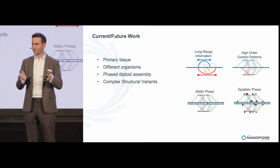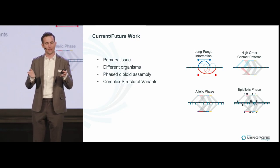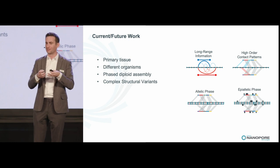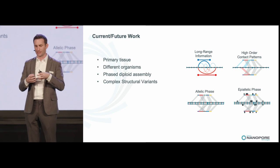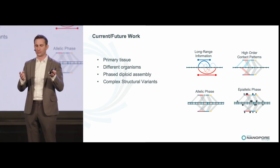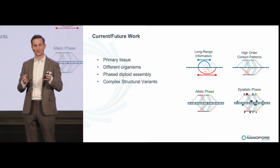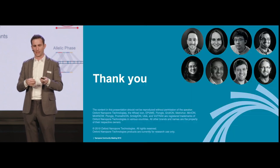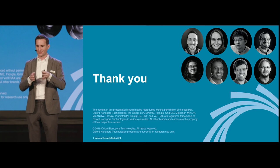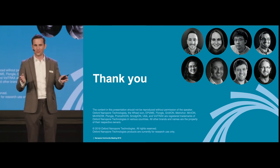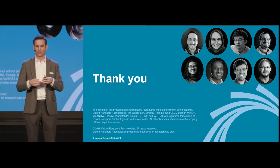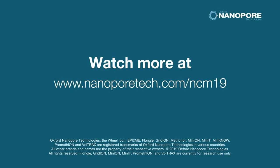That's just one example. Essentially, we think PORC reads are a very rich data type that can be applied to a whole range of different applications. We're starting to look at primary tissue and different organisms. Phased diploid assembly is going to be a big focus for us in the short term, and of course looking at complex structural variation is going to be made a lot easier by this. We have posters up on this — please find us over the next two days and ask us questions. Thank you.